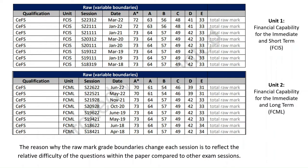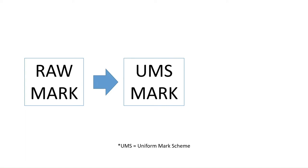You might be thinking: why do the raw mark grade boundaries change each session? Well, it's to reflect the relative difficulty of the questions within each paper compared to other exam sessions. So if the questions within a specific session are deemed to be slightly easier than those in the past, there will be a higher grade boundary, and vice versa. That is the raw mark — so how do we convert it into a UMS mark, or uniform mark scheme?